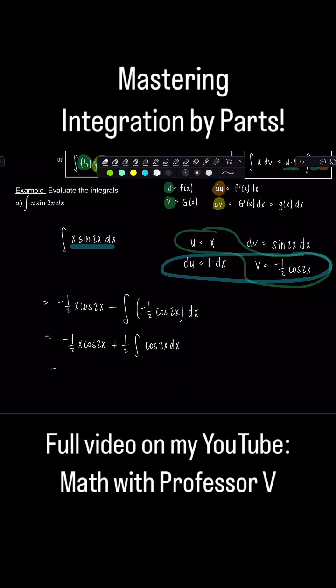So this is going to give us negative one half x cosine 2x plus one fourth, because you have to multiply by a half again, sine 2x plus c.